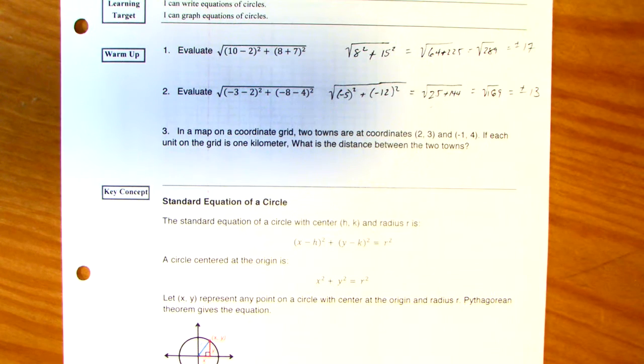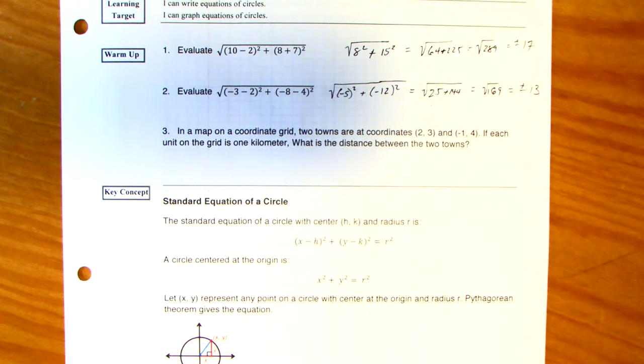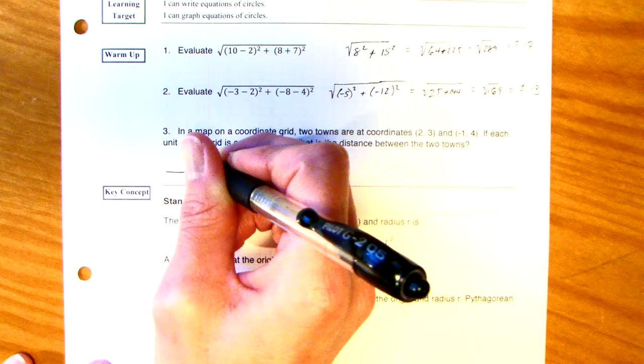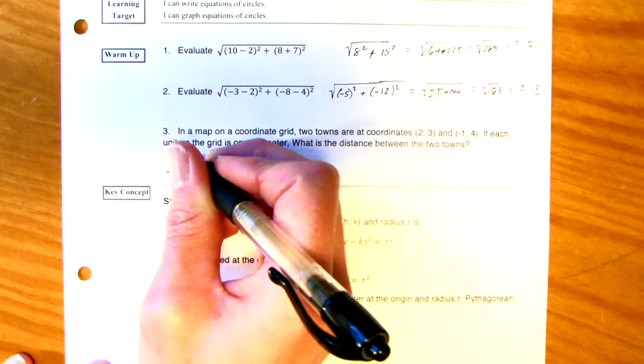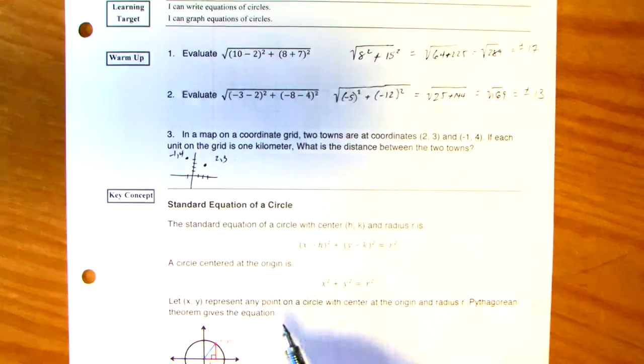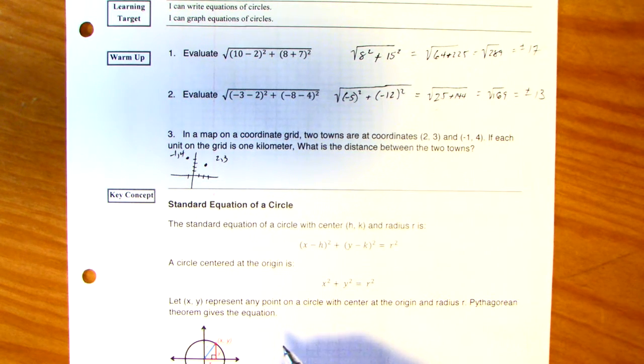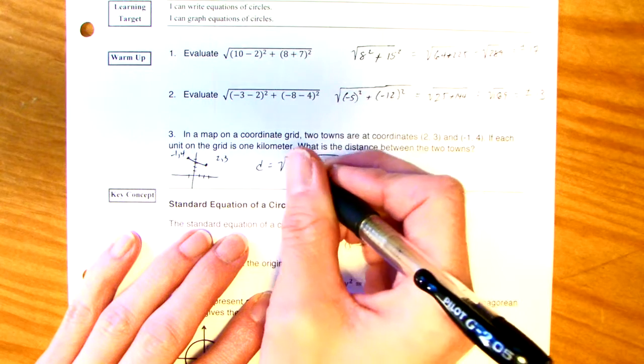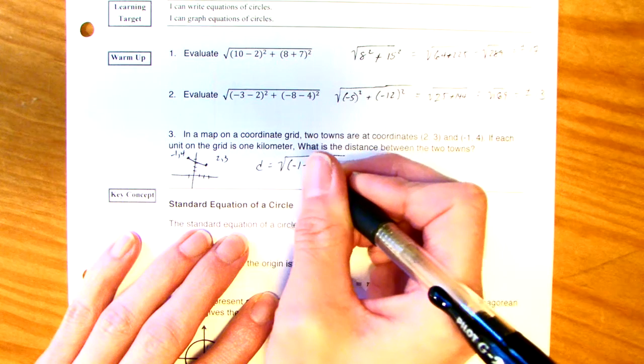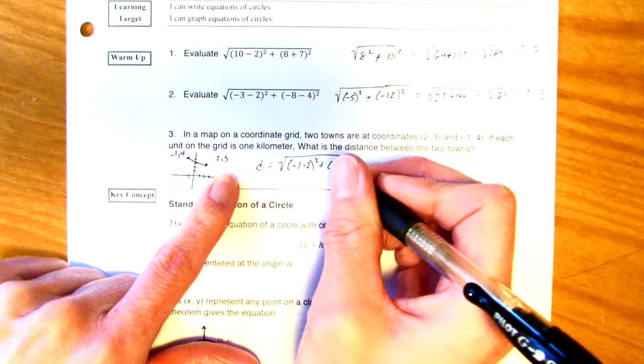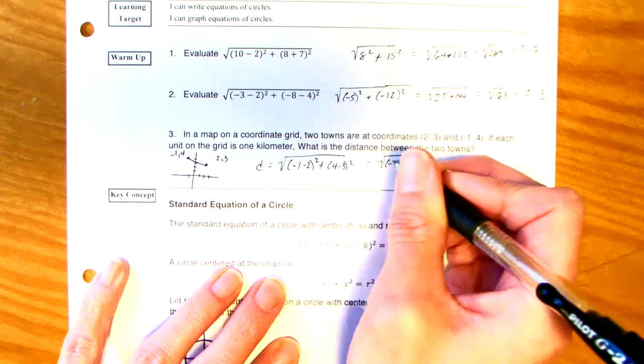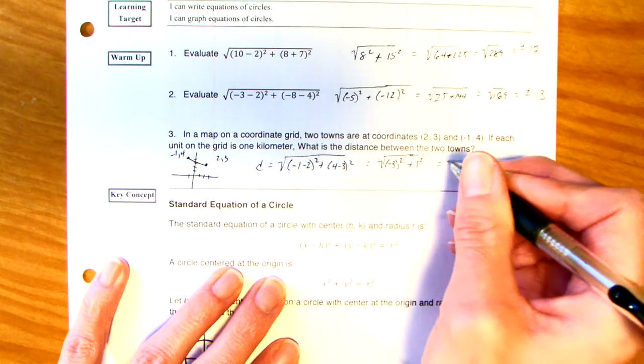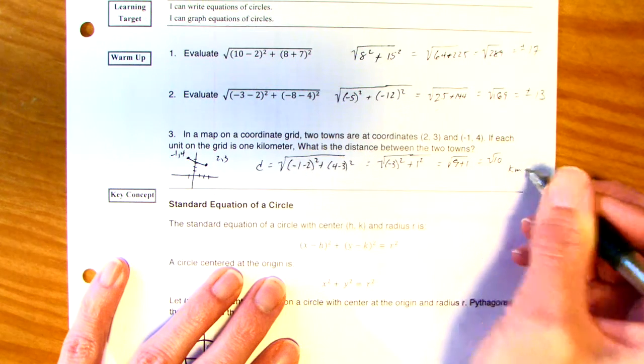Okay. The next one. In a map, or I should say on a coordinate grid, two towns are at the coordinates. So, I'm just going to put like a little makeshift grid here. We have the point 2, 3 and the point negative 1, 4. If each unit on the grid is 1 kilometer, what's the difference between the two towns? So, we're talking about distance formula. The distance will be the square root of the change of x's. So, I have negative 1 minus 2 quantity squared plus the change of y's, 4 minus 3 quantity squared.